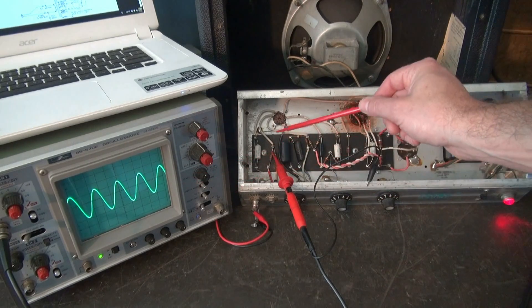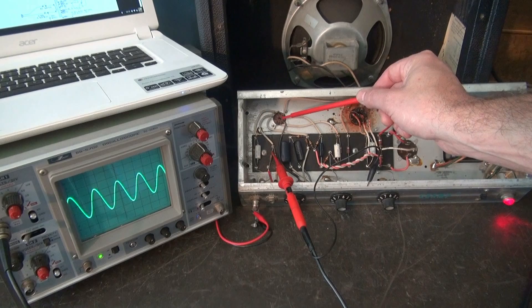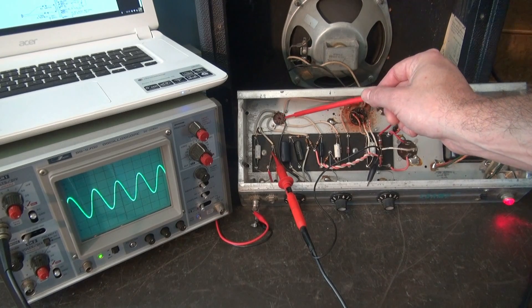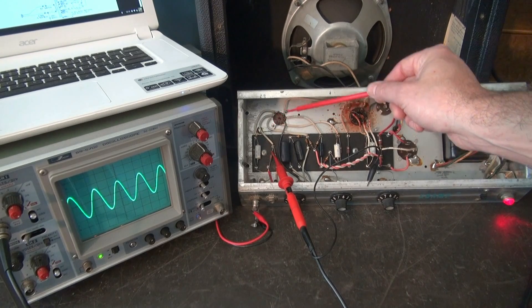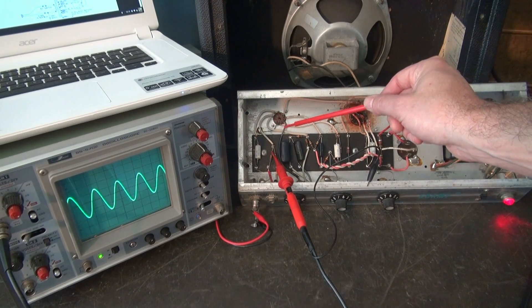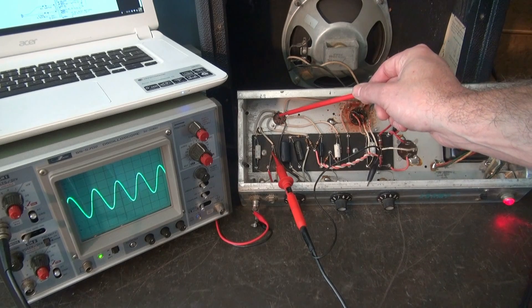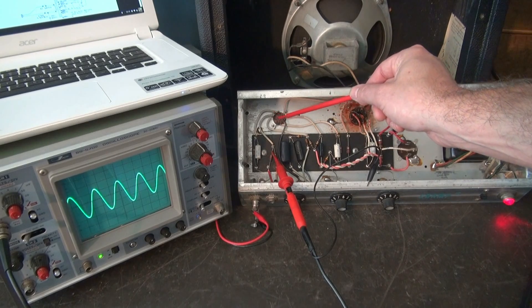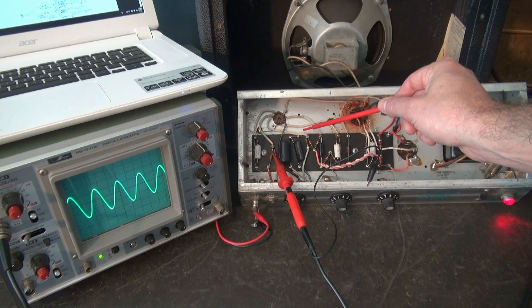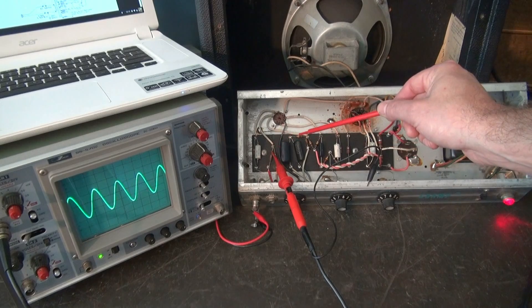Now, that lead goes to pin 2 of the 12AX7. Now, the 12AX7 has two little triode sections. We're on the first one. So it comes in pin 2, and then it exits on pin 1, which is the plate connection. So we're going to move the scope over there.